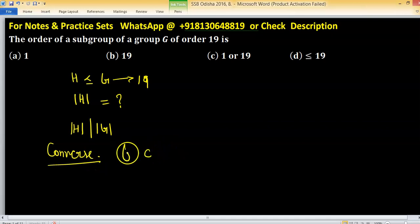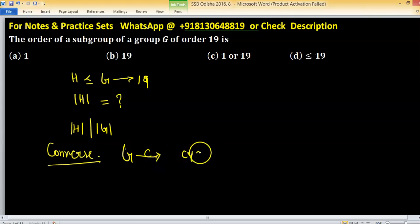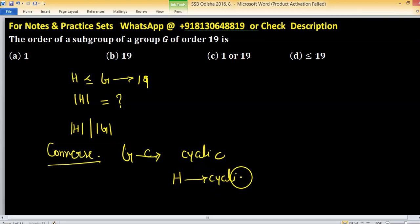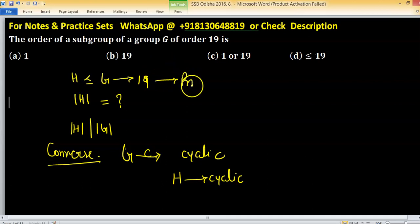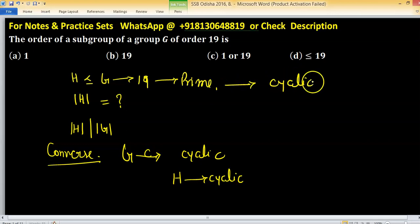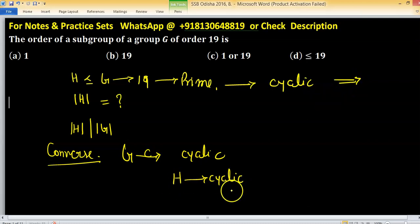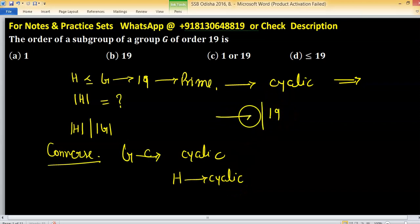But when the group is cyclic, if G is cyclic then its subgroup H is also cyclic. If the order of a group is prime, then the group is cyclic, and being cyclic implies all its subgroups will also be cyclic. So H is also cyclic.